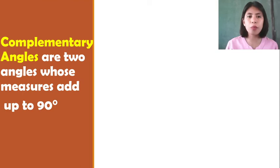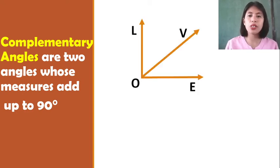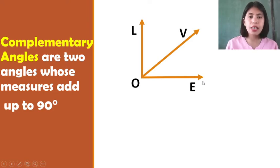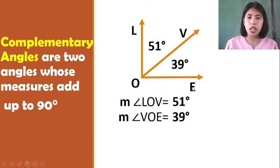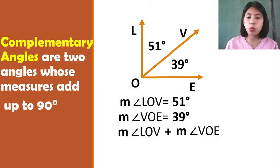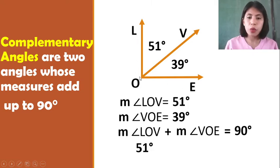So first, let's start with Complementary Angles. Complementary Angles are two angles whose measures add up to 90 degrees. Consider this figure, we have Angle L-O-V and Angle V-O-E. We can say that these two angles are Complementary Angles if the sum of their measures is equal to 90 degrees. Suppose measure angle L-O-V is equal to 51 degrees, and measure angle V-O-E is equal to 39 degrees. The sum of their measures must be equal to 90 degrees, so 51 degrees plus 39 degrees is equal to 90 degrees.